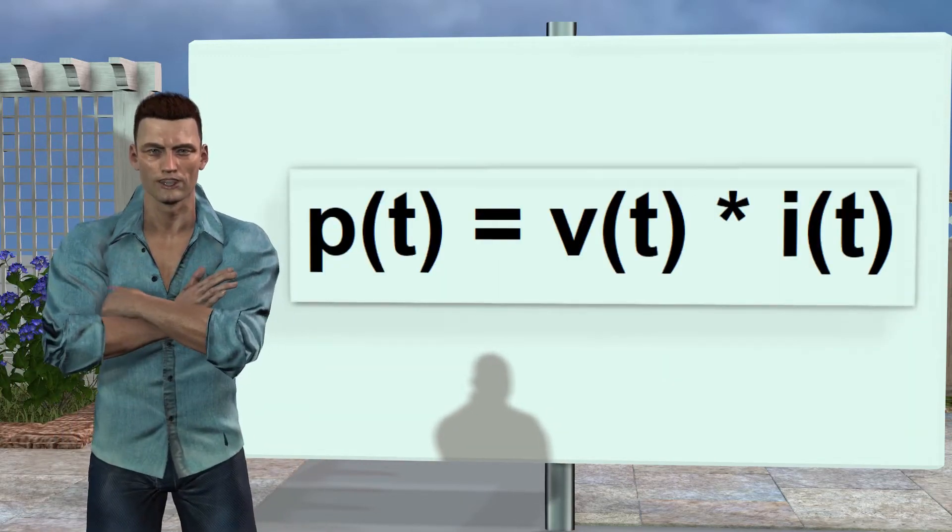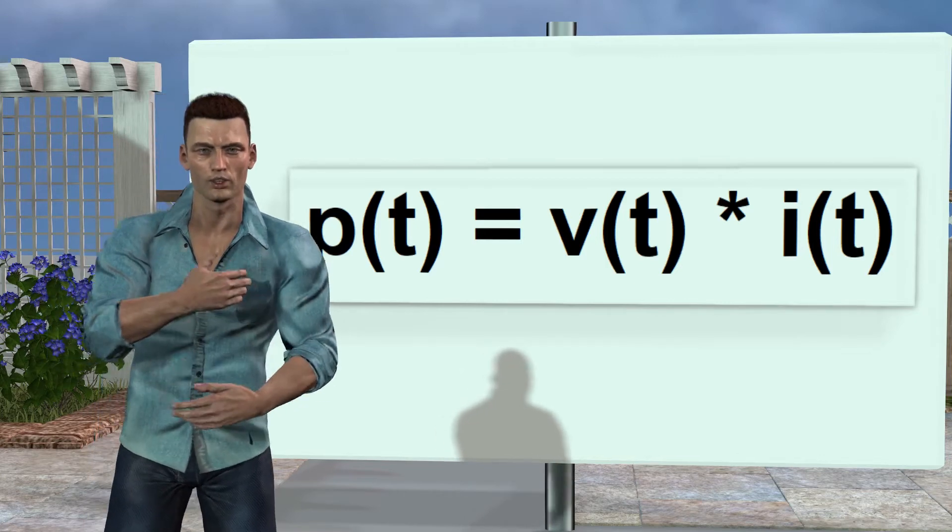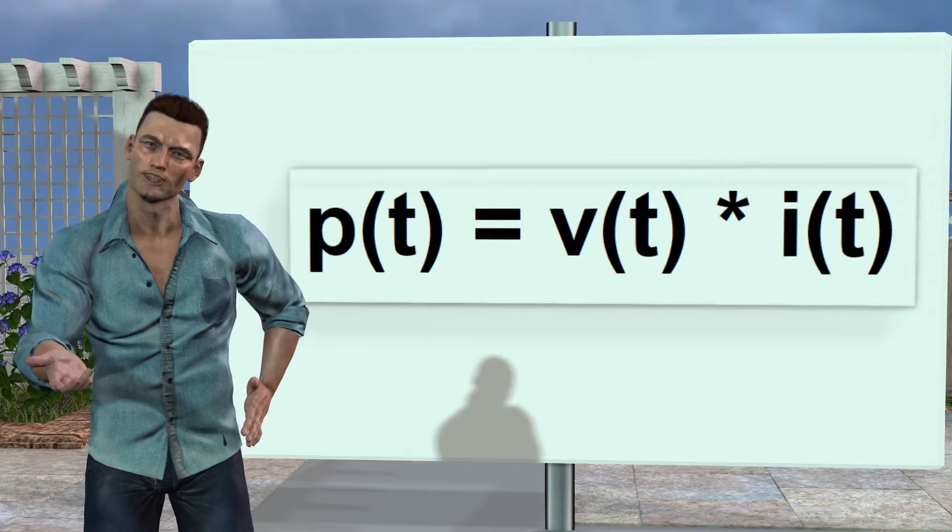Taking into account this concept of instantaneous values, the instantaneous power in a circuit is calculated multiplying the instantaneous voltage by the instantaneous current.